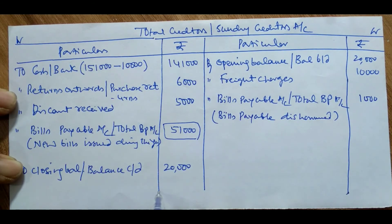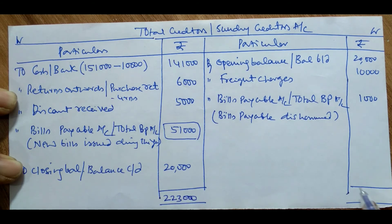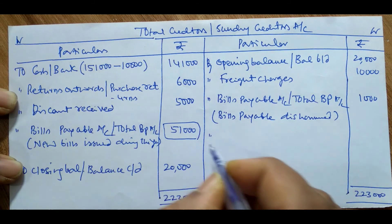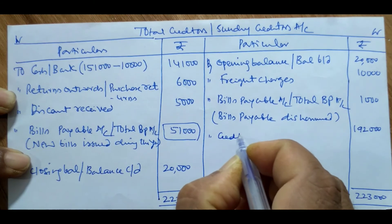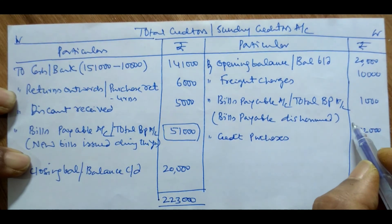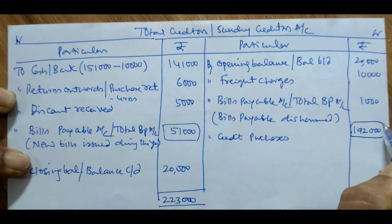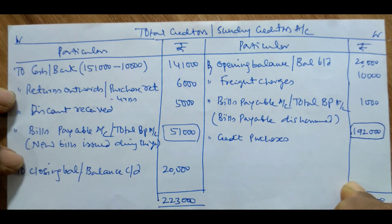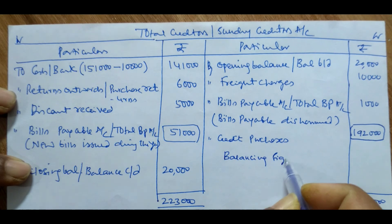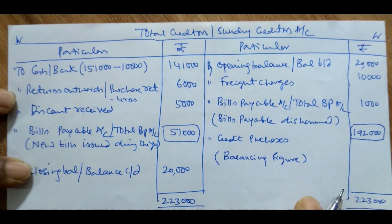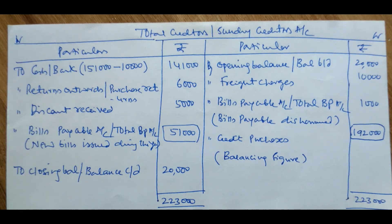After taking all these figures, we must close this account. The debit side is greater than the credit side. The total amount is Rs. 2,23,000, which must be taken to the opposite side. Out of Rs. 2,23,000, if we deduct the above said items, the balancing figure will be Rs. 1,92,000. This is termed as credit purchases — a very important item because this information is required to prepare the trading account. In this way, the total bills payable and total creditors account is prepared.